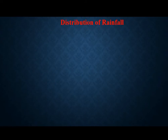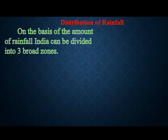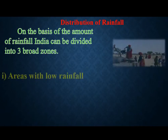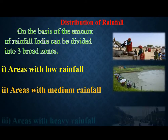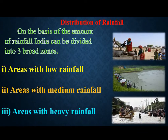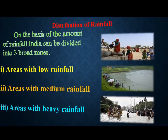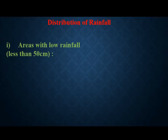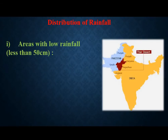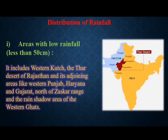Now we are going to talk about the annual distribution of rainfall in India. On the basis of rainfall, India can be divided into 3 types: areas with low rainfall, areas with medium rainfall, and areas with heavy rainfall. Areas with low rainfall means less than 50 cm of rain. This includes the Thar Desert of Rajasthan, and adjoining areas like Western Punjab, Haryana, Gujarat, and the Zaskar Range — all desert places where rainfall is very less. We call this the distribution of low rainfall areas.